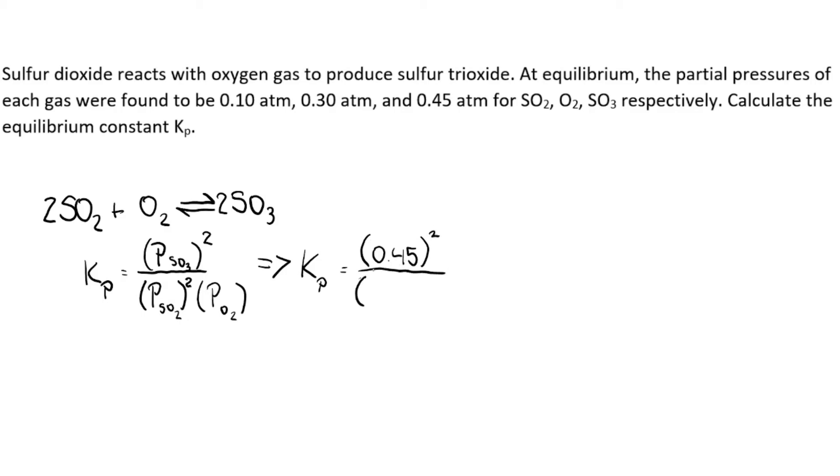The partial pressure for sulfur dioxide is 0.10 atm with the exponent of 2. The partial pressure of oxygen gas is 0.30 atm. And then when you do the calculation, Kp comes out to be 67.5.